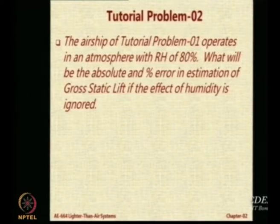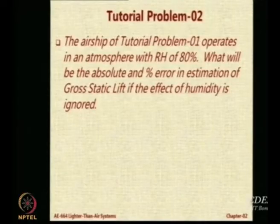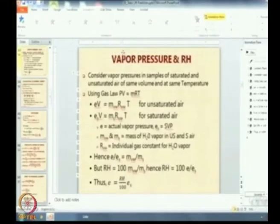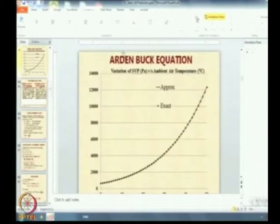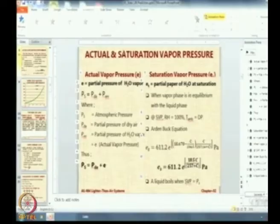To calculate this error, first of all you will have to find out what is the value of E at sea level, because in this case the airship is flying at sea level and that will be under ISA conditions. So apply this particular formula — I get the value of Es for C of 15 degrees Celsius. Please do the calculation.